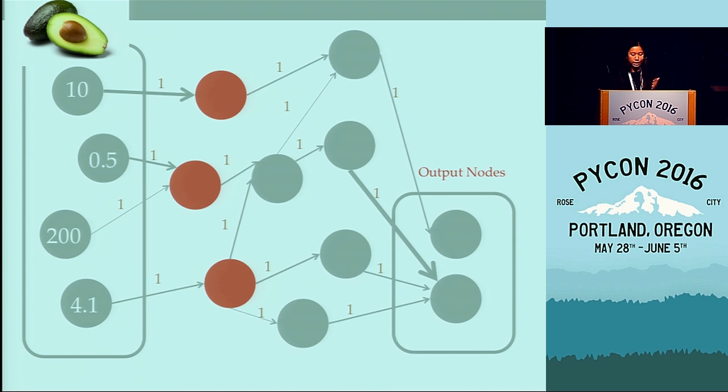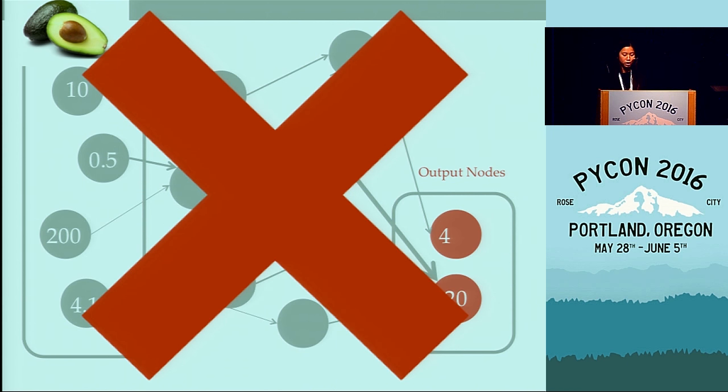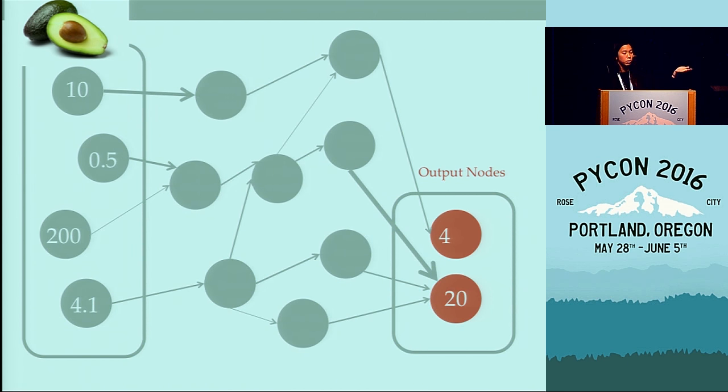Again, we forward propagate using our randomly selected weights, and we get some output nodes. Remember that these are based on our random weights, so they're not necessarily correct. But we actually know what the output should be since this is a known avocado, so we can compare the results. It turns out our output was wrong. We calculated it should be 4 and 20 - these numbers are made up, don't read too much into them - but it should actually be 5 and 19. Our error values are then how far off our model predicted from the examples that we have already observed.